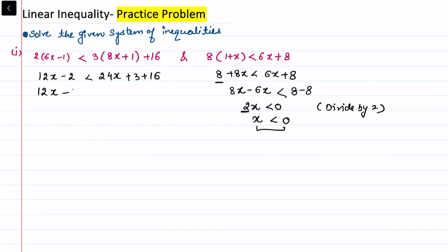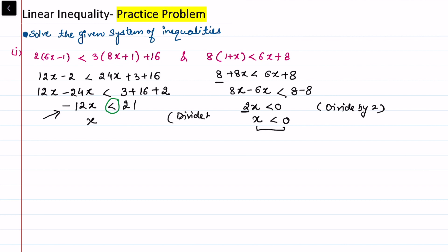For the first inequality, rearranging gives 12x minus 24x less than 3 plus 16 plus 2, so minus 12x less than 21. Because we are dividing by a negative number (minus 12), the inequality sign changes. So x is greater than minus 21 by 12, which simplifies to x greater than minus 7 by 4.